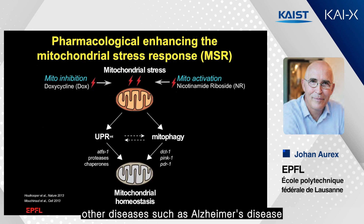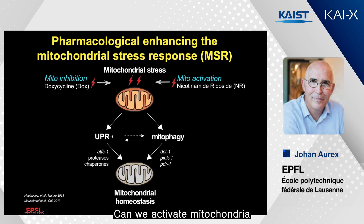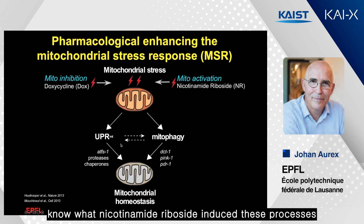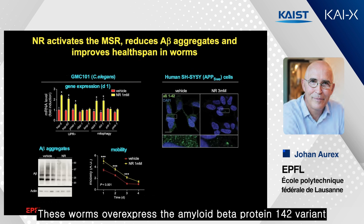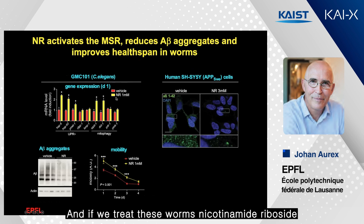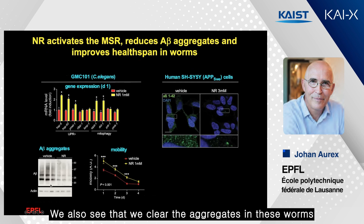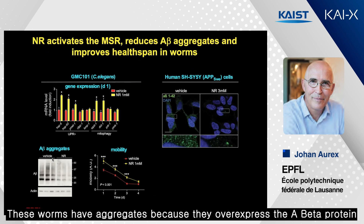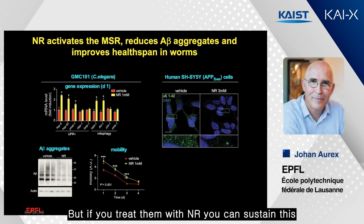We have data that this works in other diseases, such as Alzheimer's disease, and we are also testing it in myocardial infarction. Can we activate mitochondria with nicotinamide riboside to induce these processes and make mitochondria more robust? Here we show data in a C. elegans model of Alzheimer's disease — these worms overexpress the amyloid beta 1-42 variant, the toxic cleaved variant. If we treat these worms with nicotinamide riboside, we induce the UPR or mitophagy, clear aggregates, and since they express it in muscles and lose mobility fast, treatment with NR sustains this mobility.